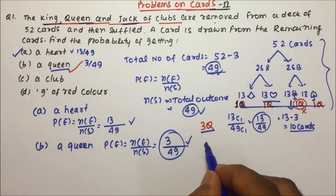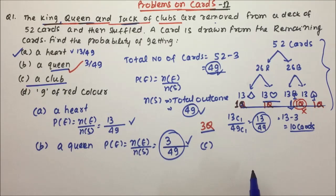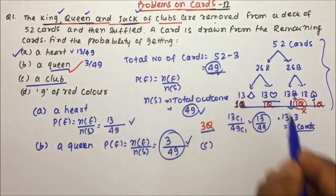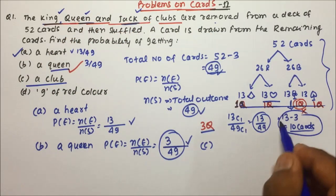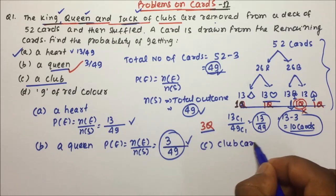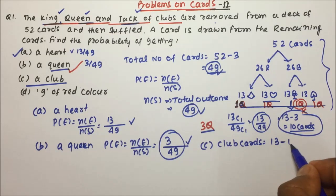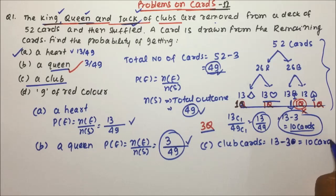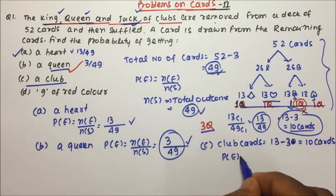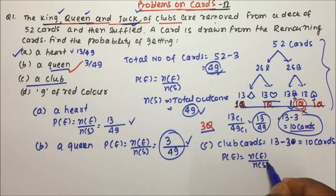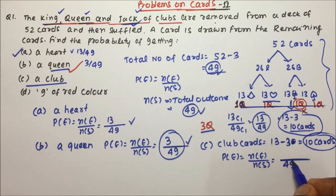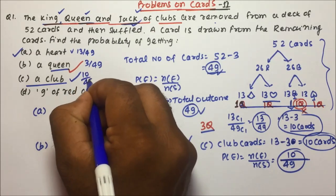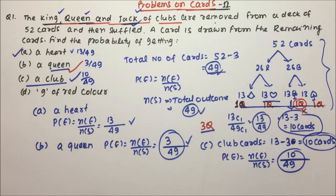Question C: you want a club. King, queen and jack have been removed from clubs. So total club cards now = 13 minus 3 = 10. Probability = Ne / Ns. Total outcomes = 49. You want one club card, so you select from 10. Therefore probability = 10/49.